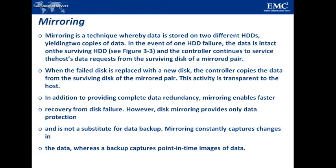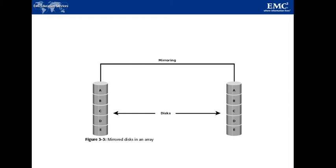Mirroring involves duplication of data, meaning the storage capacity needed is twice the amount of data being stored. For example, to store 1 GB of data, you need disk drives with 2 GB of space — two 1 GB disks. Therefore, mirroring is considered expensive and is preferred only for mission-critical applications that cannot afford any risk of data loss.